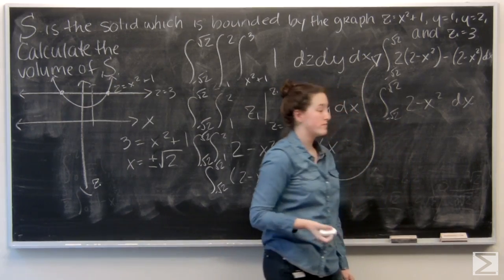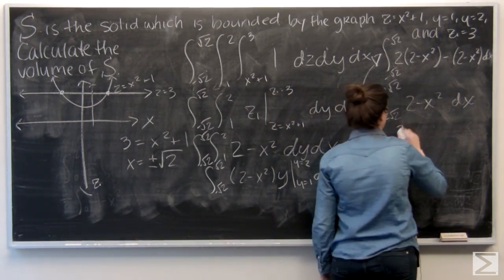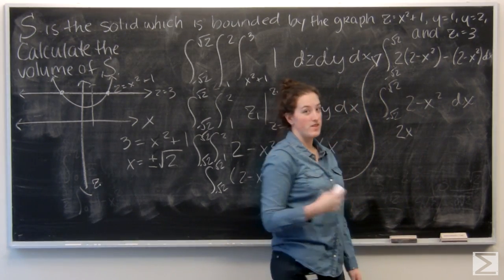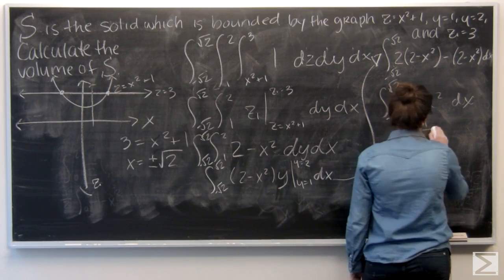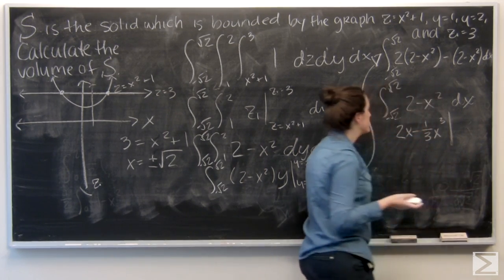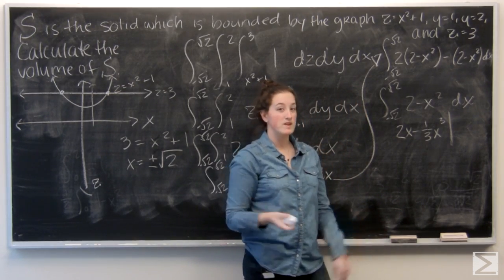So now I'm ready to integrate with respect to x. 2 becomes 2x, and x squared becomes 1 third x to the third. And I'm ready to evaluate. My lower x bound is negative root 2, and my upper x bound is positive root 2.